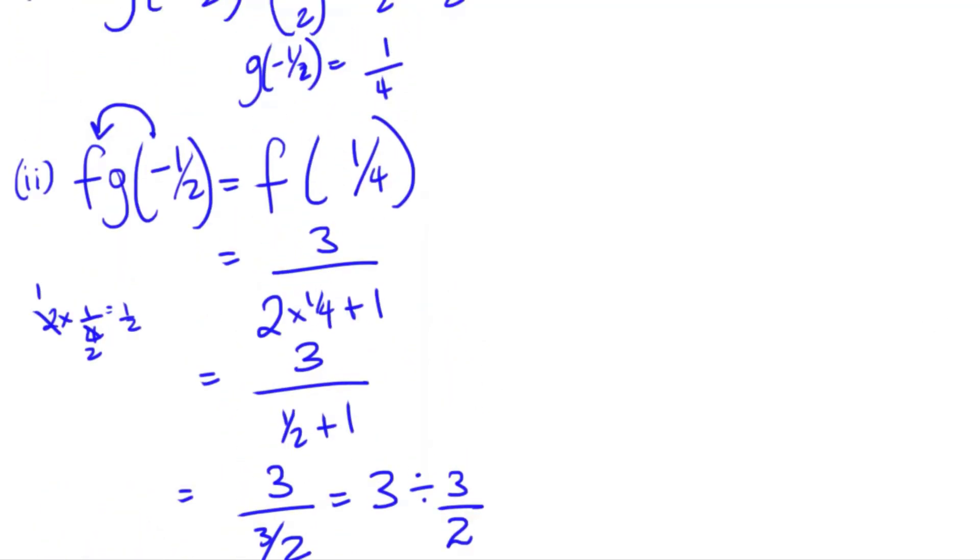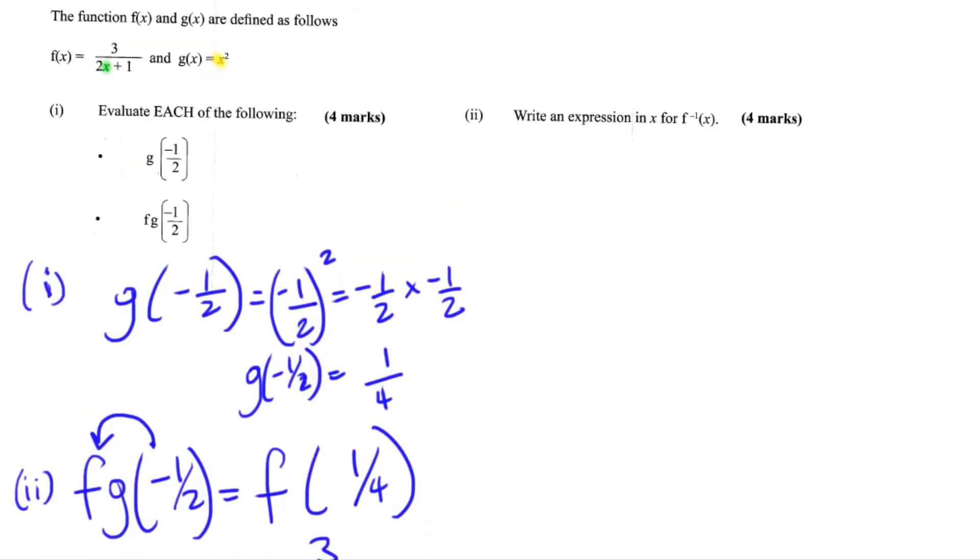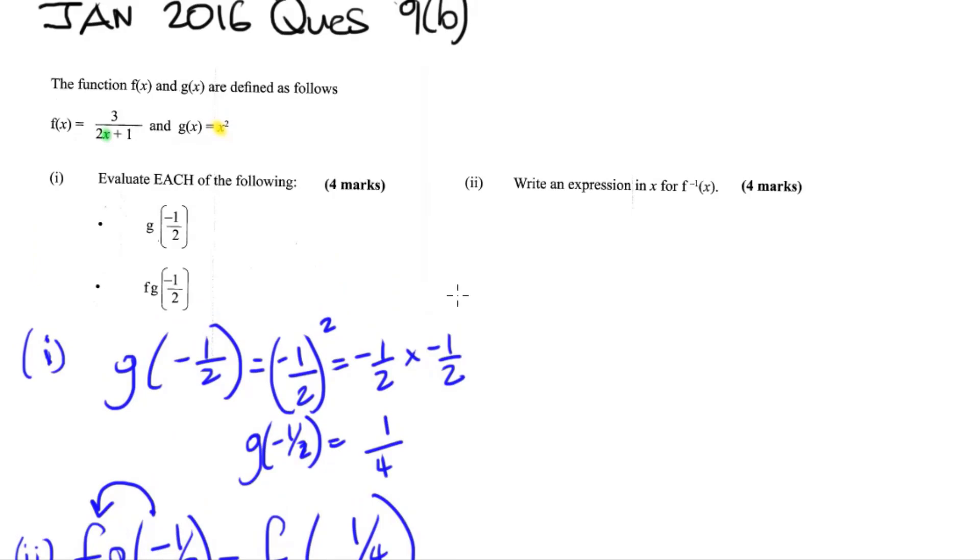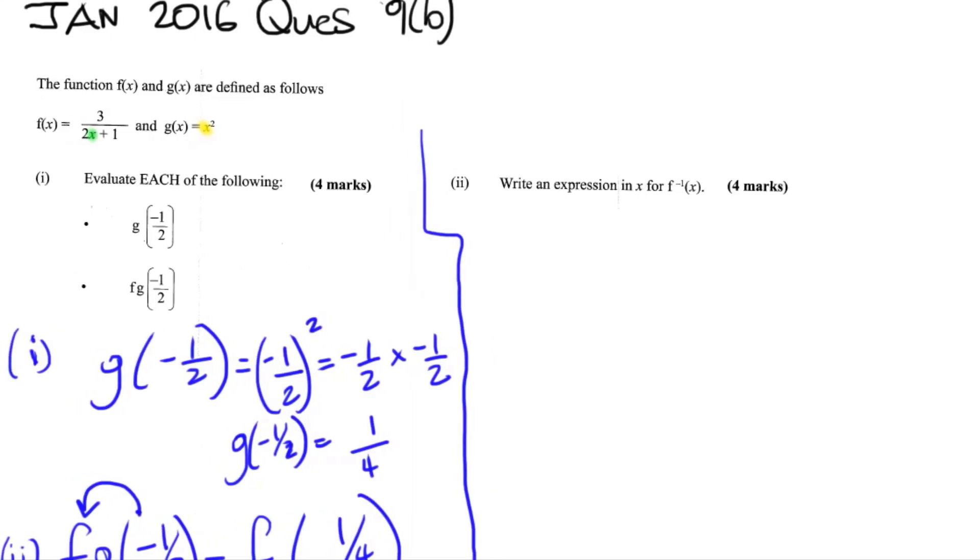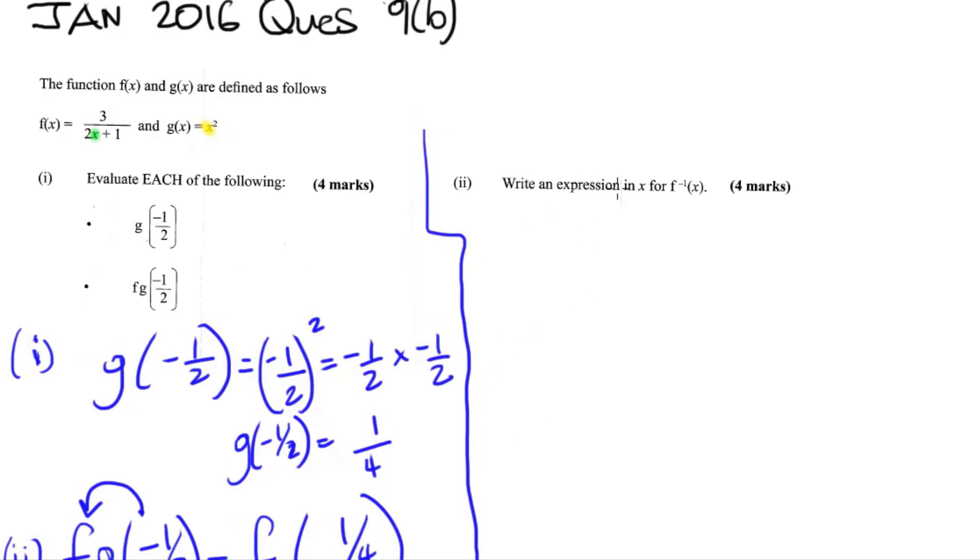Alright, so we found g of negative 1 half. We found fg of negative 1 half. And that means we can move on to our second part, which says that we want to find f inverse x. We're looking for f inverse x. So do you remember how to find the inverse function? Basically, we can use the concept of transposition. So first, we let y be equal to f of x.